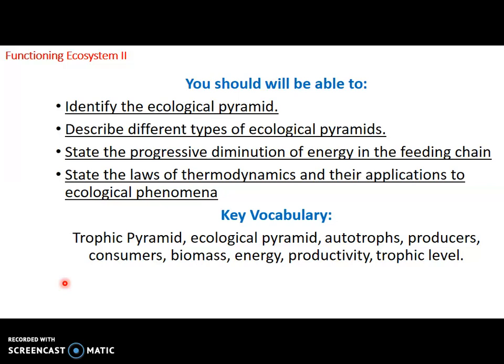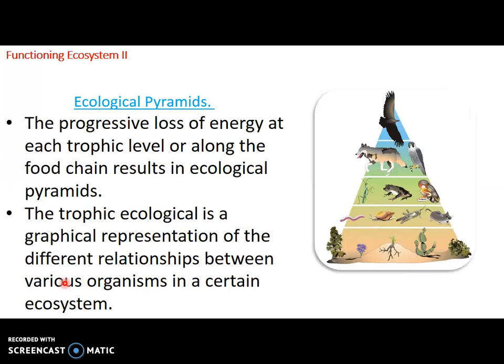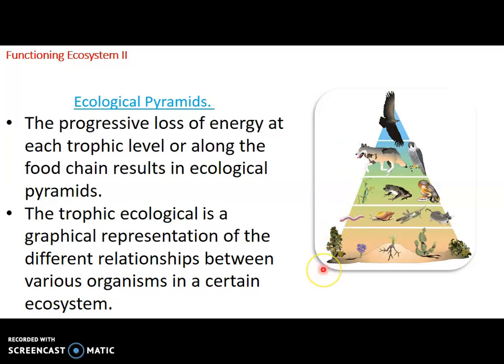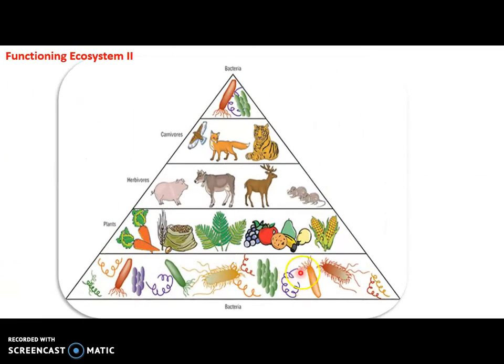What is an ecological pyramid? An ecological pyramid is a graphical presentation of the different relationships between various organisms in an ecosystem. The different trophic levels that we learned last week are represented by bars that form the pyramid. These bars are what we call the ecological pyramid. The order of each trophic level is always based on who eats whom, and usually it represents energy flow.